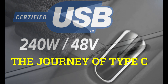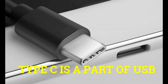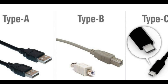Type C is a part of USB. But what about Type A and Type B? Type A connector — we can usually see it on data transfer casings, like external DDR SSD casings. Type B is usually used for printers. But Type C nowadays is famous as a universal connector.